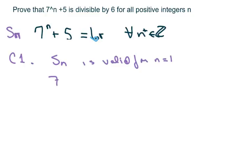Basically, I'm going to plug in 1, and that equals 12, and 12 is definitely divisible by 6. So that checks out and it's valid.